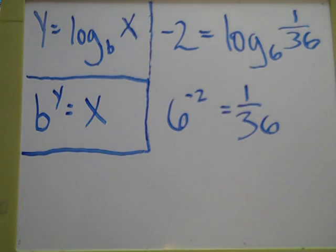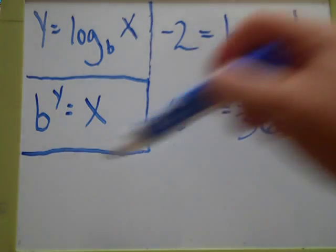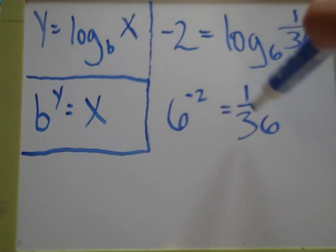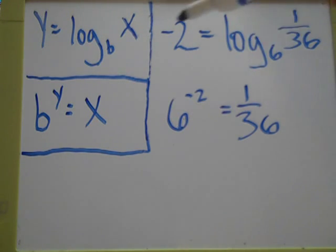Alright, so, it's that simple that you just expressed this problem, 6 to the negative 2 power equals 1 over 36. That means that they're equal to each other, they're the same thing. Expressed as a logarithm, all you do is plug in the numbers.